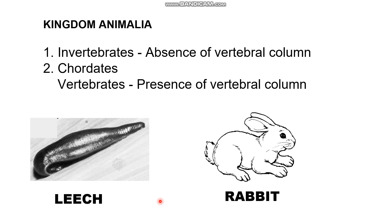Previously we read about kingdom Animalia, which comprises all animals — two groups: invertebrates and chordates. Invertebrates have an absence of a vertebral column, while vertebrates have the presence of a vertebral column. In this chapter, we will study one invertebrate — the leech — and one vertebrate — the rabbit.